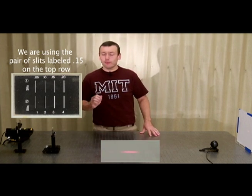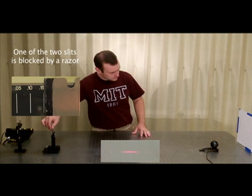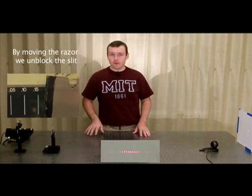Right now, we've blocked one of the two slits, so light is propagating through a single slit, and this is the pattern that results. Let's see what happens when we open the second slit. The pattern changes significantly.